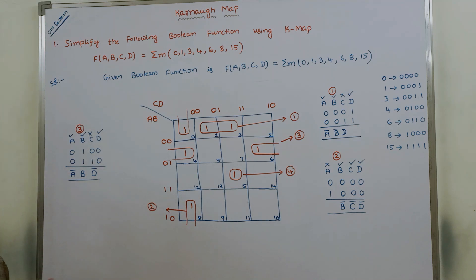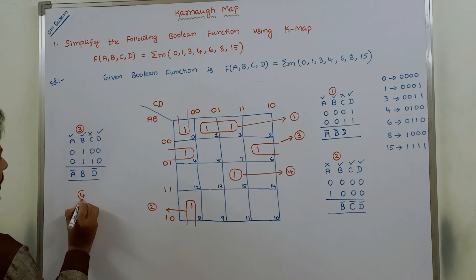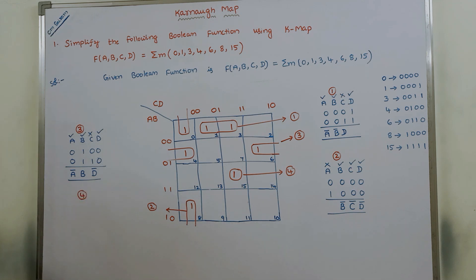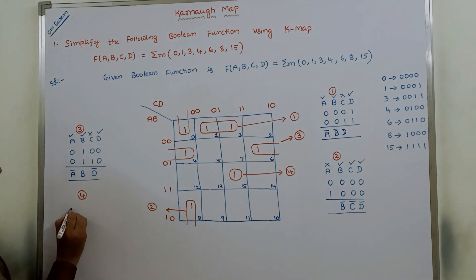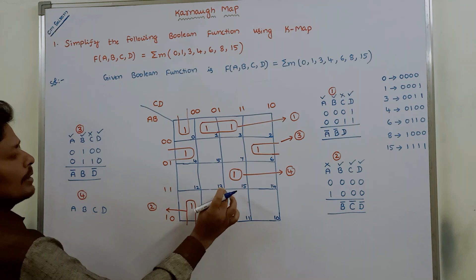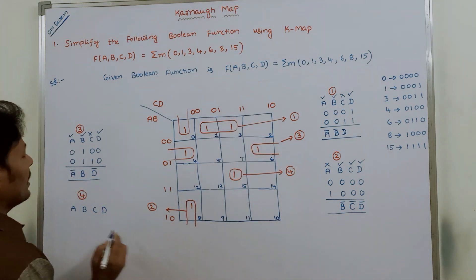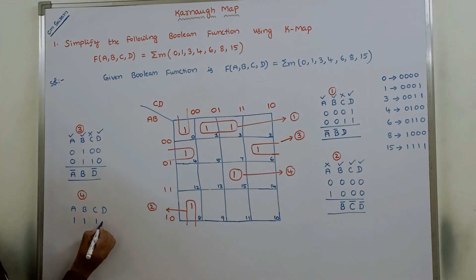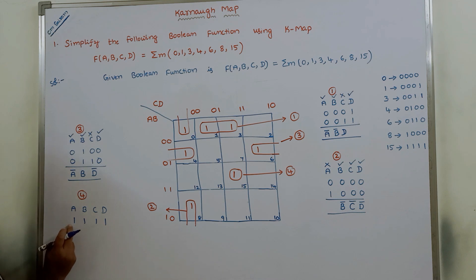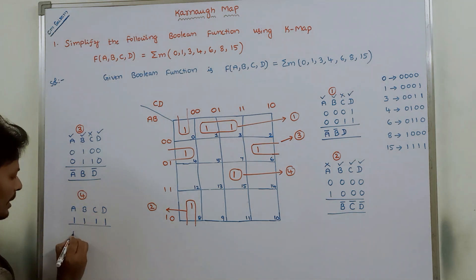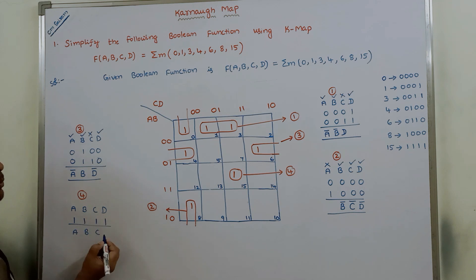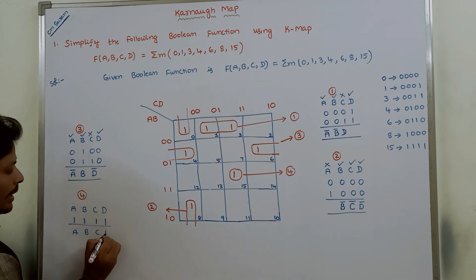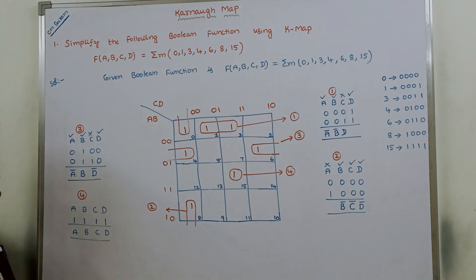For the fourth group, it is a singleton: cell 15. Since 15 in binary is 1111, A=1 → write A; B=1 → write B; C=1 → write C; D=1 → write D. So the expression is A·B·C·D.